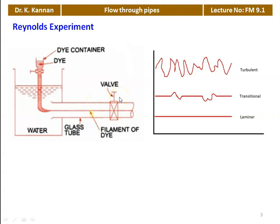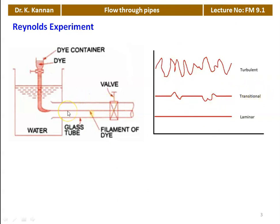Then the flow is adjusted and increased. After some change in the flow rate, fluctuation in the flow occurs — the dye is flowing and fluctuating. This fluctuation over a portion of the pipe length is called transitional flow, from laminar to turbulent. When you further regulate the flow, the fluctuation is vigorous — the dye flows in an irregular fashion in the pipeline. This is called turbulent flow. By regulating the flow, Reynolds observed laminar flow, transitional flow, and turbulent flow.